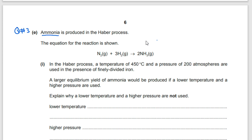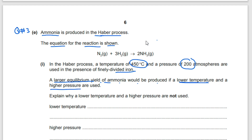Question number three: ammonia is produced in the Haber process. The equation for the reaction is shown. In the Haber process, a temperature of 450 degrees Celsius and a pressure of 200 atm are used in the presence of finely divided iron. A larger equilibrium yield of ammonia would be produced if a lower temperature and a higher pressure are used. Explain why a lower temperature and a higher pressure are not used.